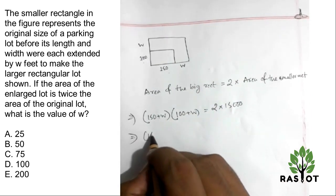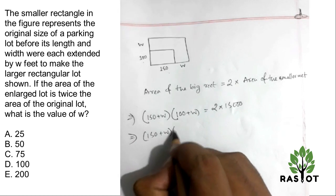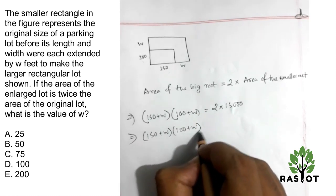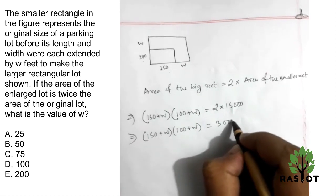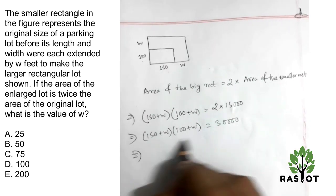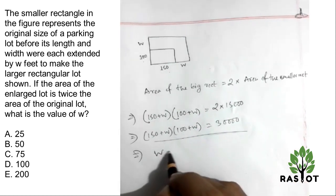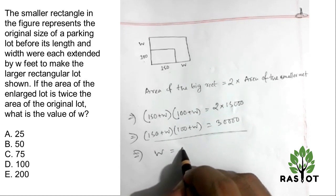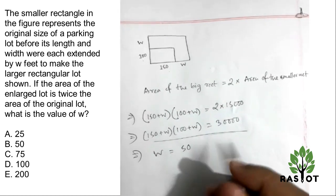150 plus w is equal to... 50,000, I mean that's the value.